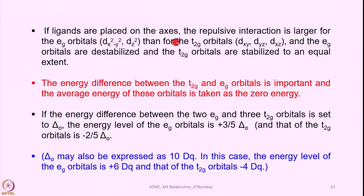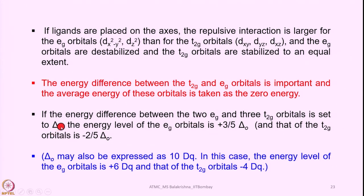If ligands are placed on the axes, the repulsive interaction is larger for the eg orbitals than for the t2g orbitals. The eg orbitals are destabilized and the t2g orbitals are stabilized to an equal extent. The energy difference between t2g and eg orbitals is important, and the average energy is taken as zero — the barycentre. If the energy difference between the 2 eg and 3 t2g orbitals is set to Δo, this is called the crystal field splitting energy for octahedral splitting.